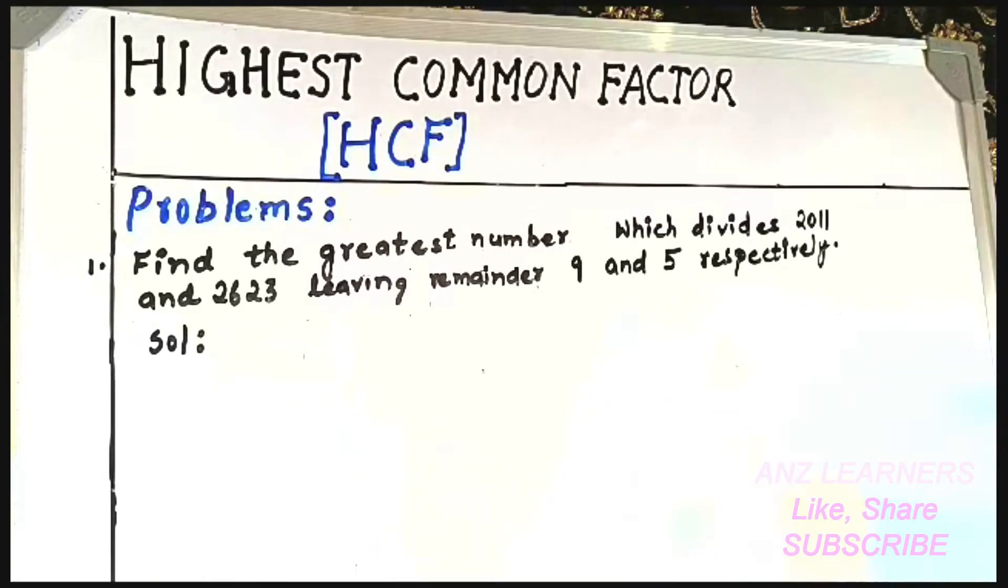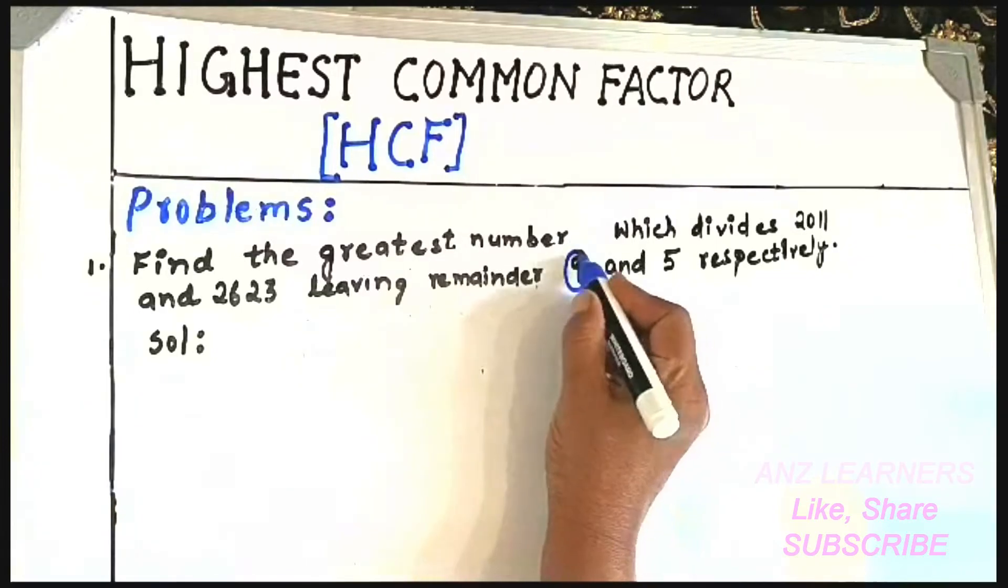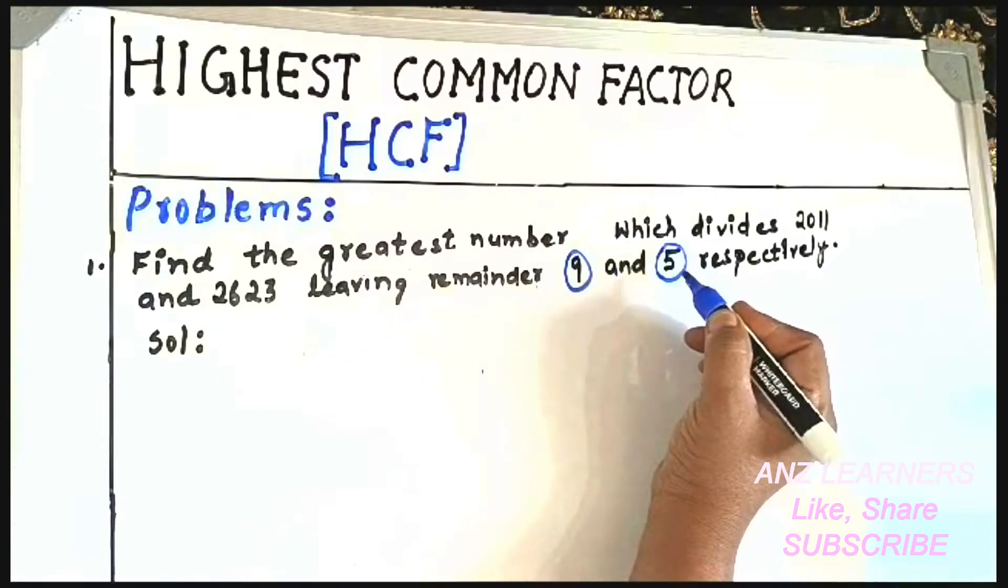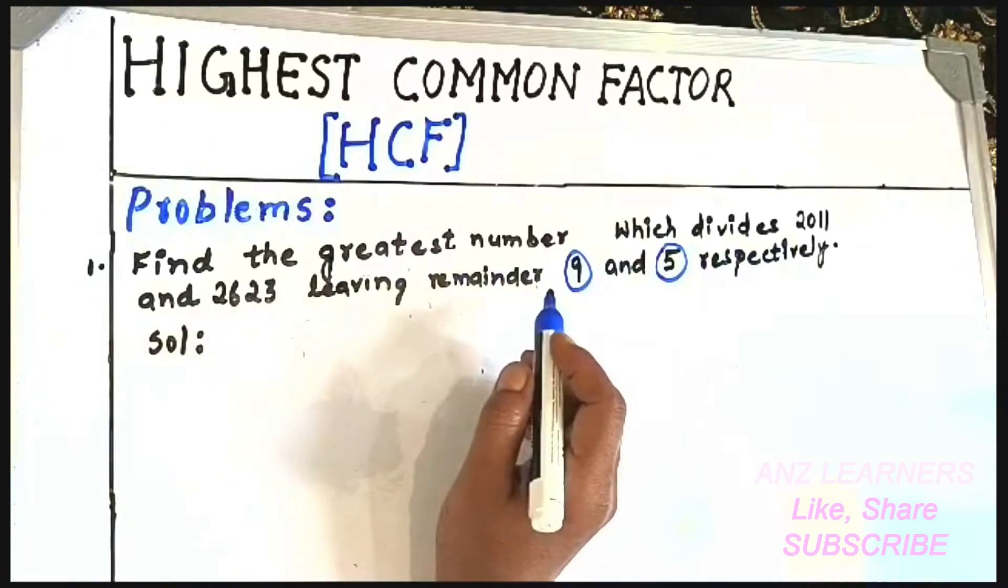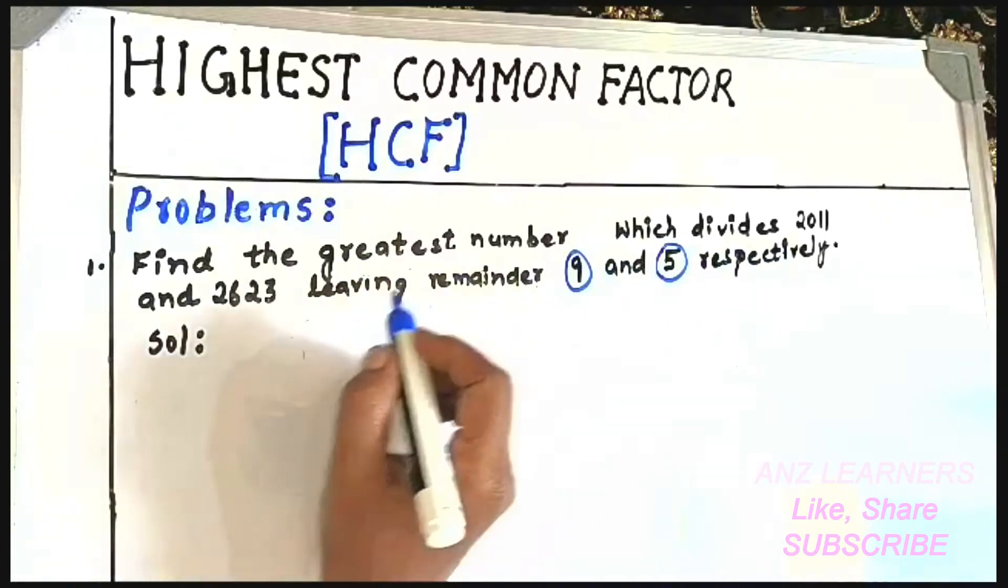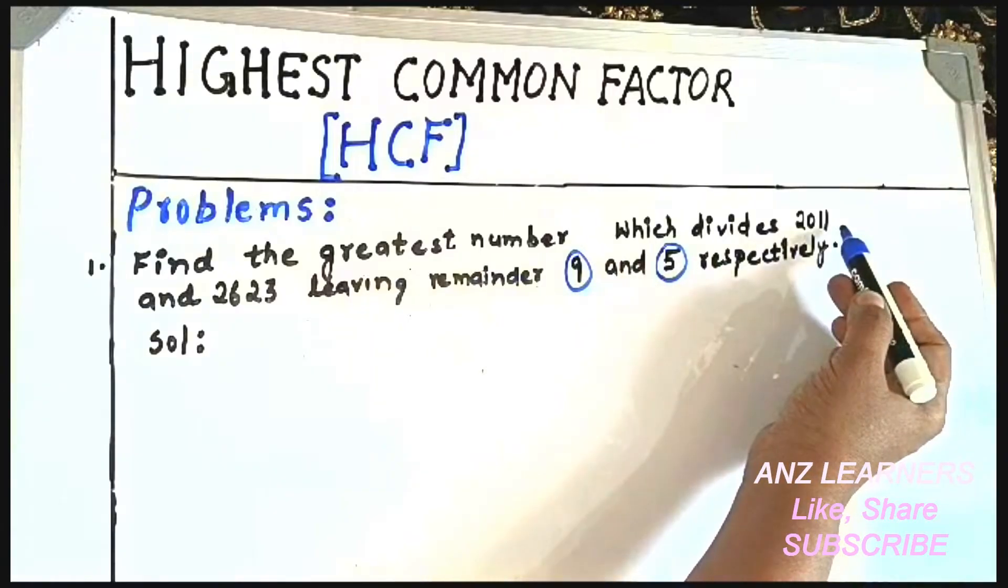2623 leaving remainder 9 and 5 respectively. So what you have to do exactly here is shown: 9 and 5 are the remainders for these two numbers respectively. It means 9 is the remainder for 2011